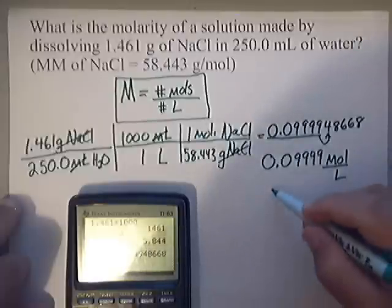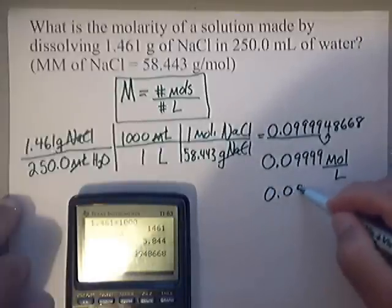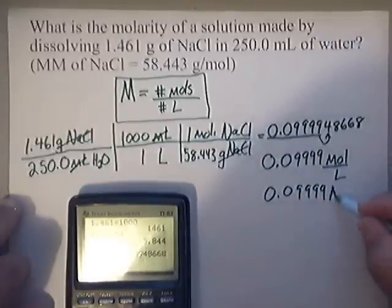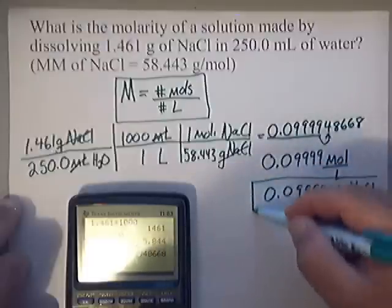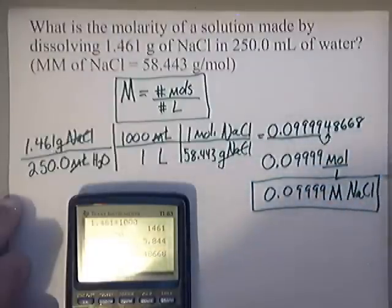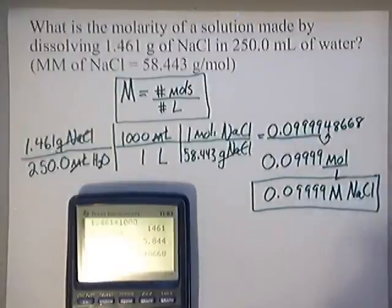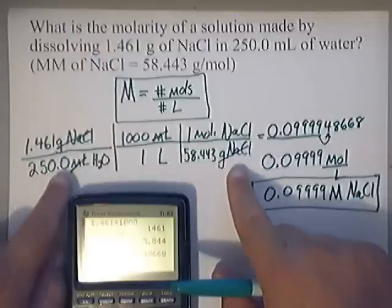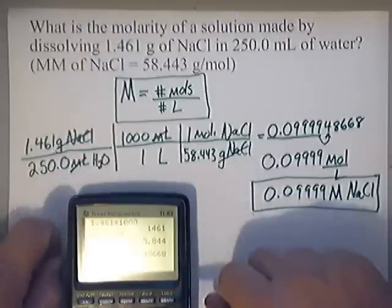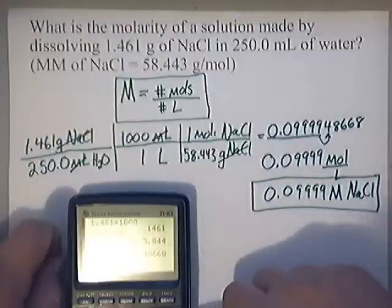That ends up being 0.0999 Molarity of NaCl, and that is our answer. I hope this helps with understanding molarity and how simple it is to calculate. This is calculating molarity using stoichiometry, and that's the way I prefer to do it. Just watch the video over and over and it should help you.